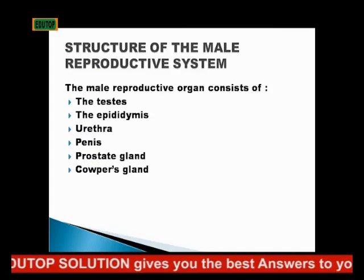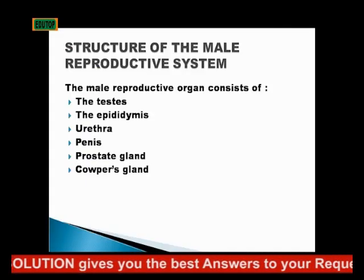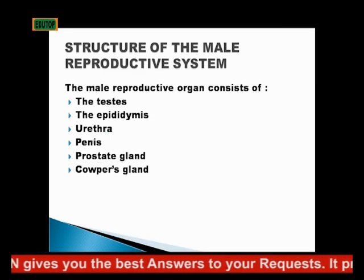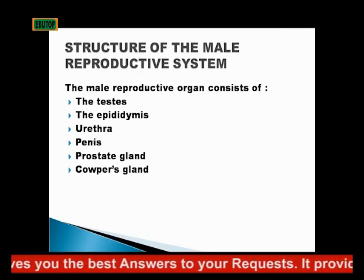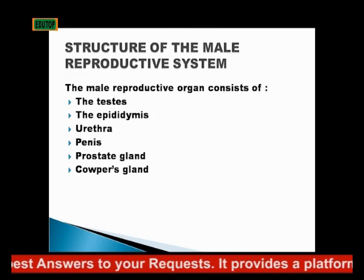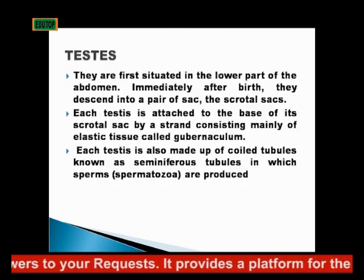It's a very similar topic and that is why we have to go through it again. The male reproductive organ consists of the testes, the epididymis, the urethra, the penis, the prostate gland, and the Cowper's gland.